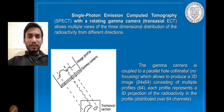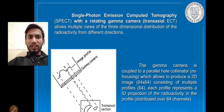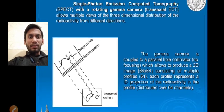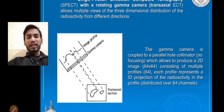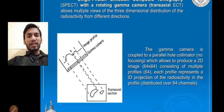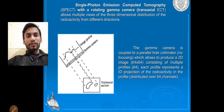The gamma camera is coupled to a parallel collimator, which allows production of a 2D image consisting of profiles. Each profile represents the 1D projection of radioactivity. The gamma camera moves in all 360 degrees and the collimator moves in the same direction as the source, producing a focused image in 2D with consistent resolution — giving about 64 profiles of the image.